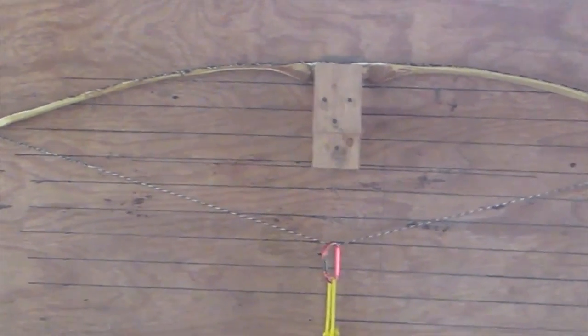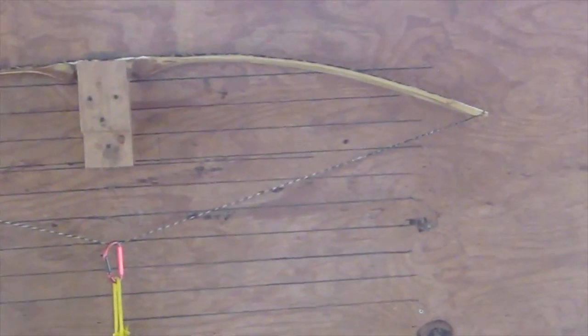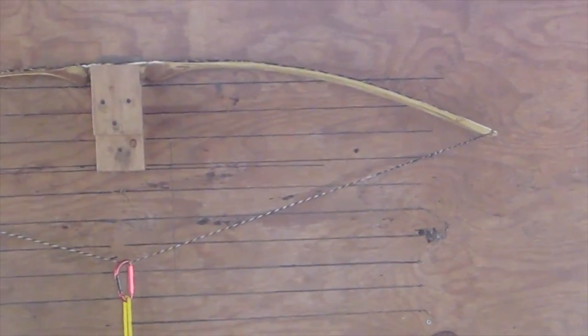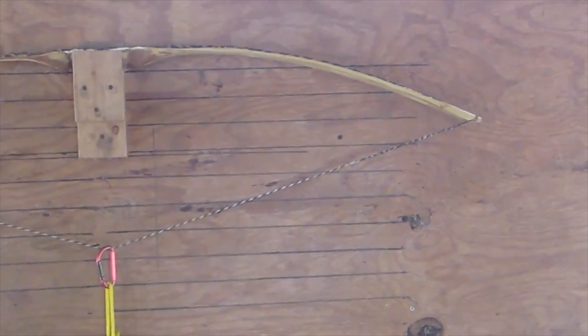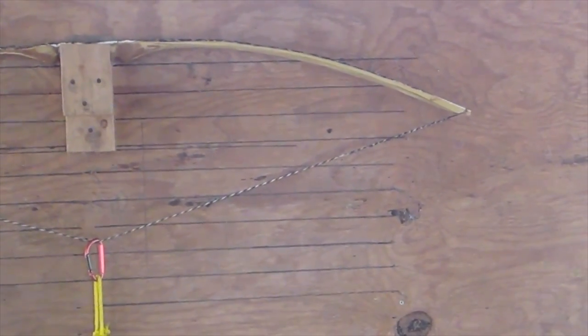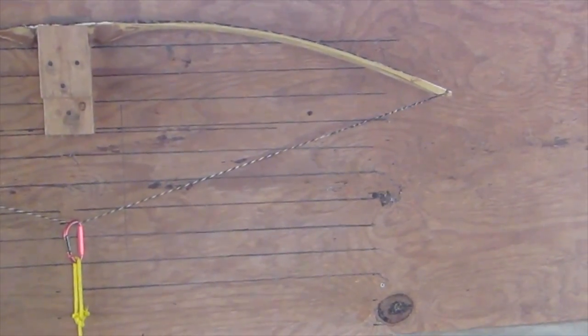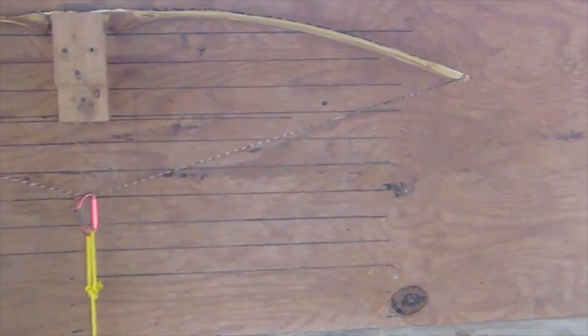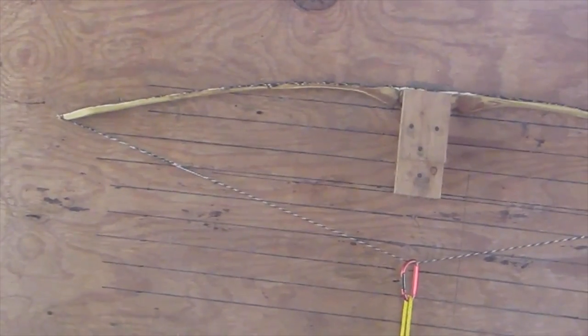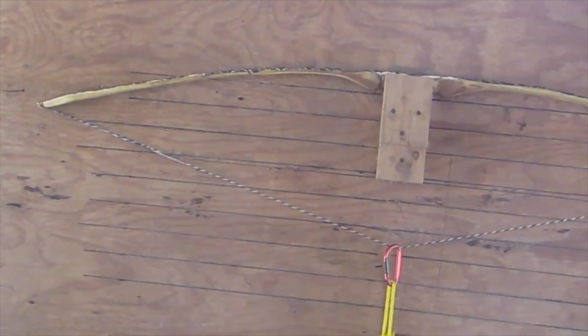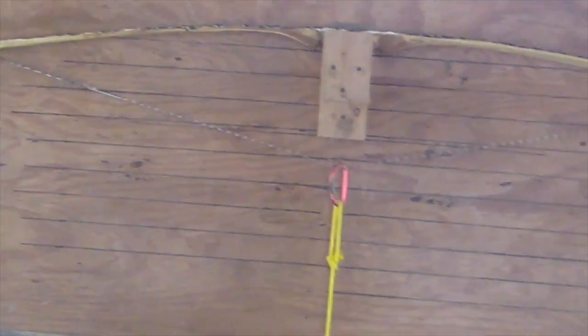When I pull the string, that limb's bending like that. That limb's bending better than it was, but I can see that I need to bend out on the tip, out on the two thirds from the tip, two thirds back in needs to be pulled. And on this one, out on the tip needs to be pulled.